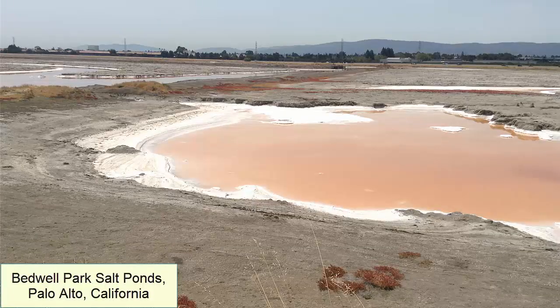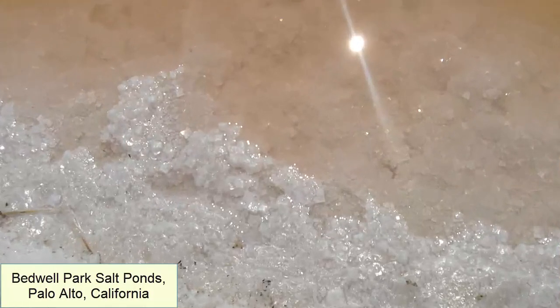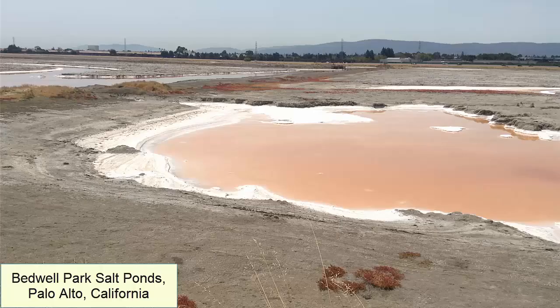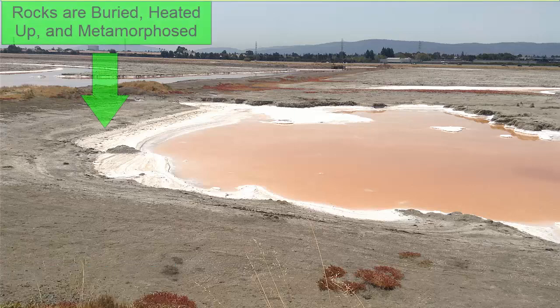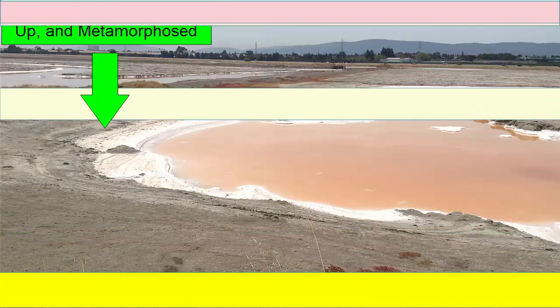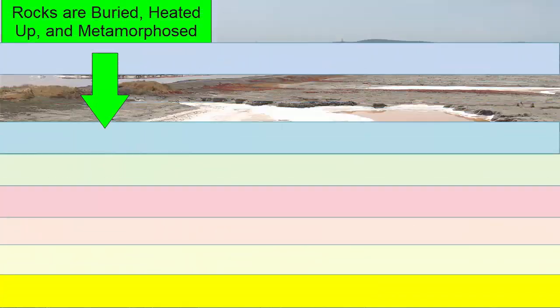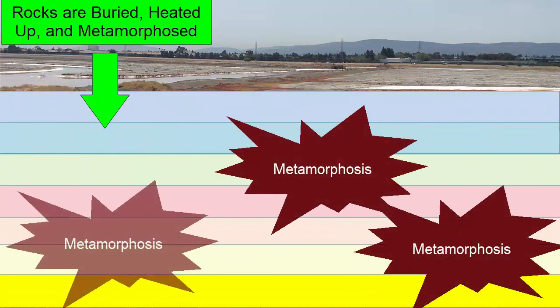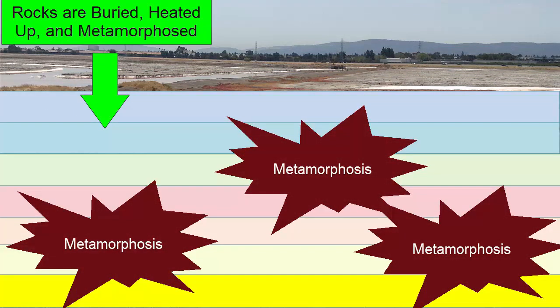For example, imagine that a shallow seabed evaporates and leaves behind salt crystals — a sedimentary rock. The setting is a warm, dry climate near the ocean. Over time, these rocks can get buried and heated up and put under pressure, where they then change or metamorphose into new rock. Now the setting is deep under a continent.